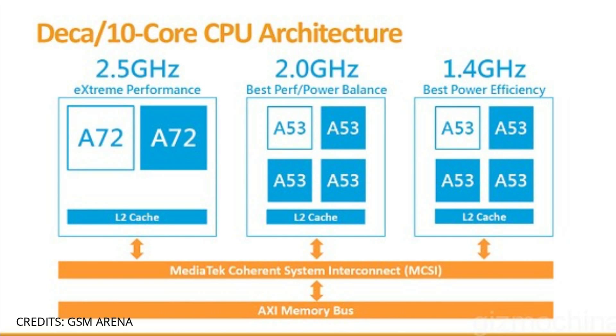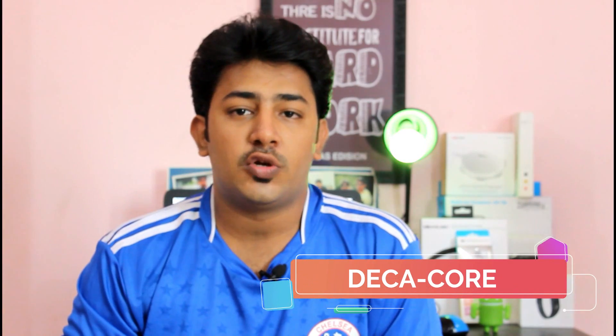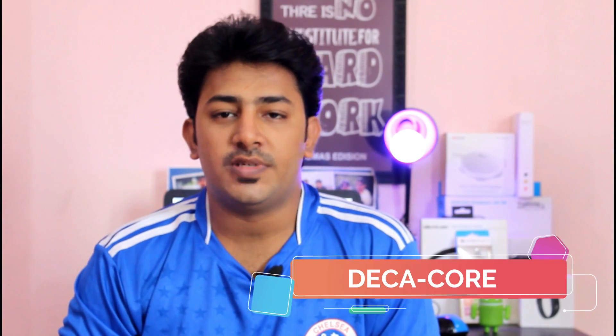In the X-Series, there is a performance-focused lineup with a lot of chipsets, including support for a 325MP camera. With the X-Series, the latest flagship devices feature a Deca-core configuration — that is a 10-core chipset.